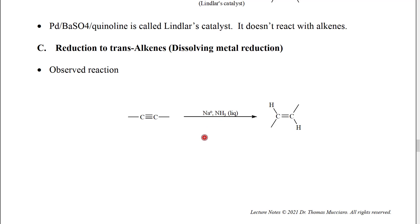In fact, we use this zero-superscript symbol for a variety of metals that normally become positive ions. For example, potassium zero (K⁰) or magnesium zero (Mg⁰). We'll see some of these later in the semester.